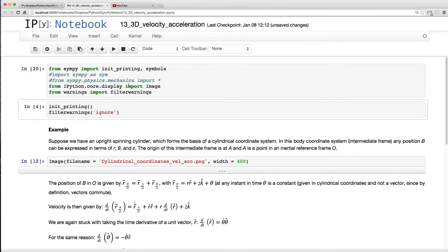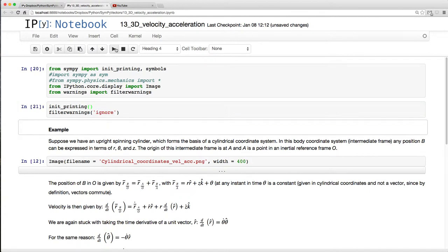We're not really going to use any proper coding here. So, I'm just going to import the images and filter warnings. Let's look at an example. Now, suppose we have an upright spinning cylinder there, which forms the basis of a cylindrical coordinate system. Remember those?